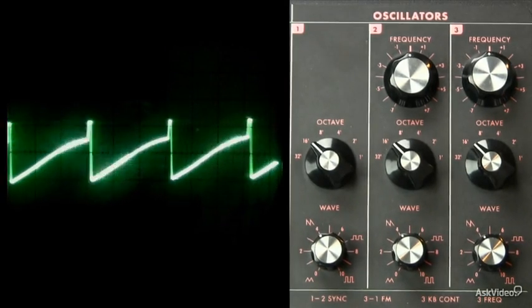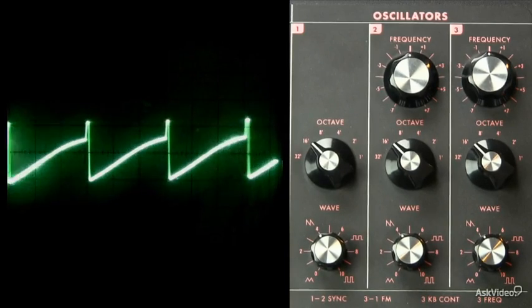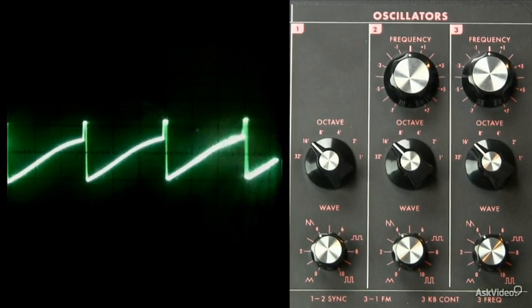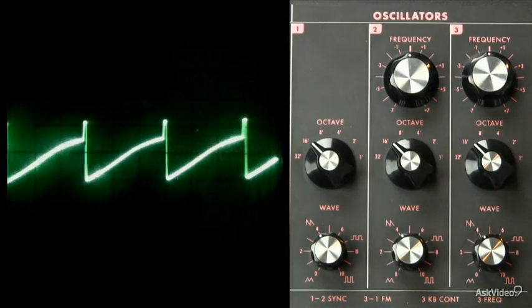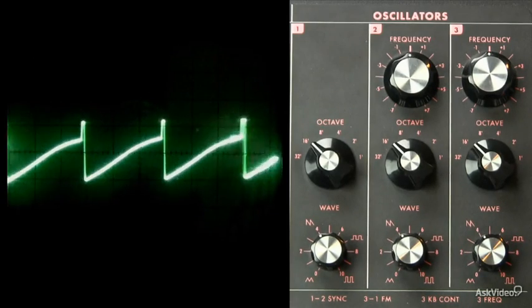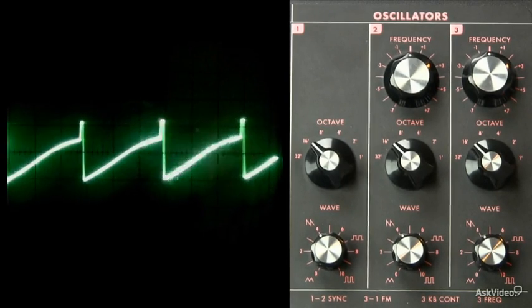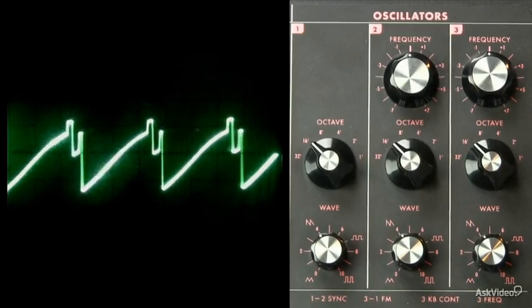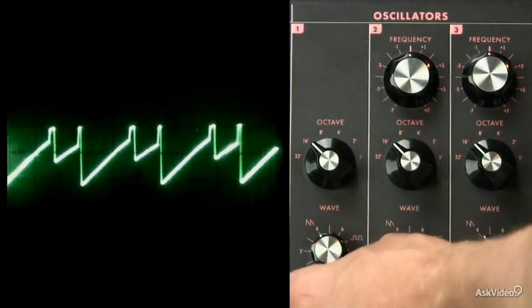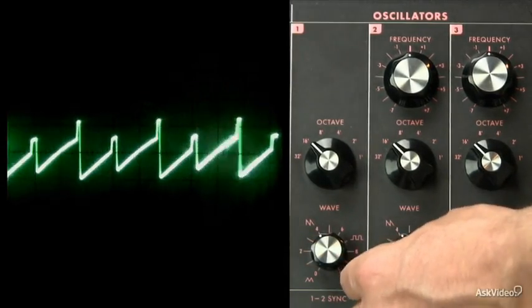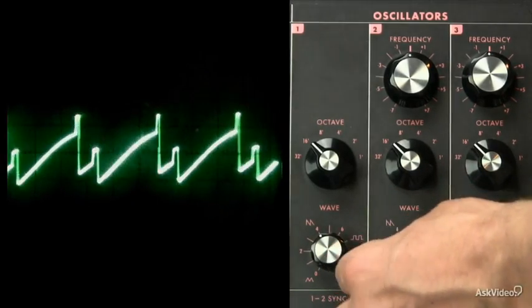In the instance of this Moog Voyager, we have more than one oscillator, and they all have variable wave shape. So let's see what it looks like when we bring in another oscillator at the same pitch setting. The more you change the wave shape, the more varied your timbre is going to be.